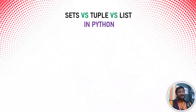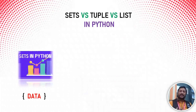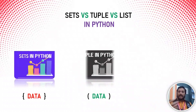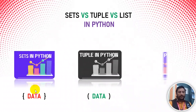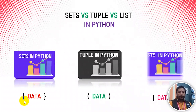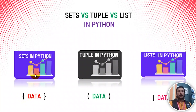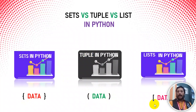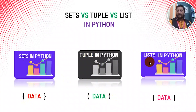We can store sets, tuples, and lists. If you use curly braces, it's a set. If you use parentheses with round brackets, it's a tuple. And if you use square box brackets, it's a list.